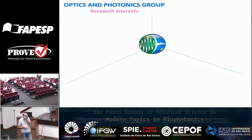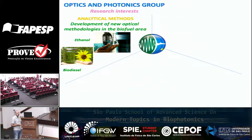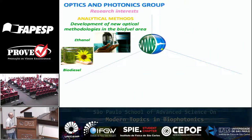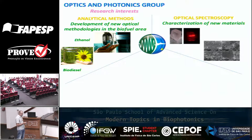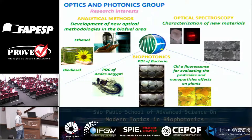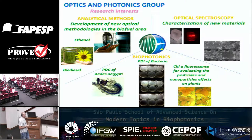Our research interests can be divided into three parts. One involves analytical methods — using optical devices and techniques to develop analytical processes, especially involving biodiesel and ethanol. We also work in optical spectroscopy to characterize the photophysical properties of new materials developed by different partners. And also biophotonics. Today I'm going to talk about chlorophyll fluorescence related to some environmental problems.